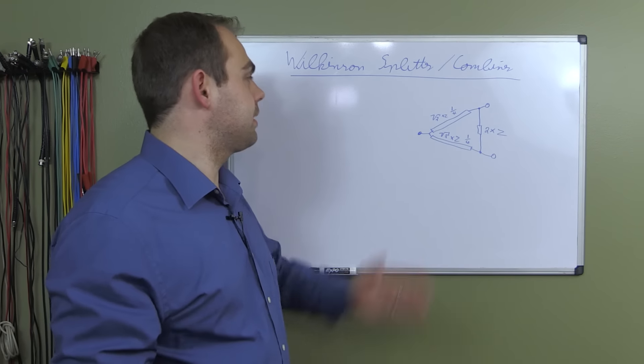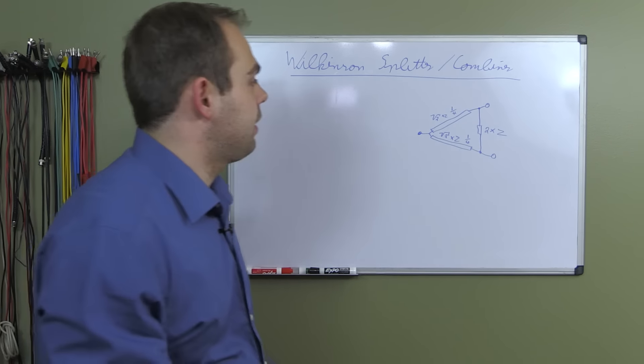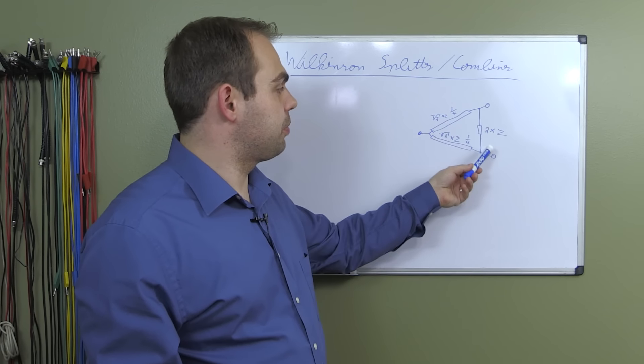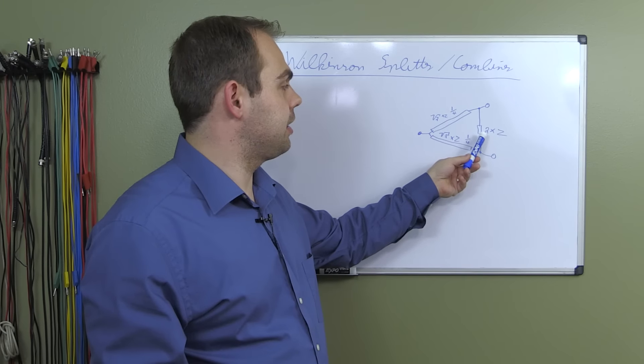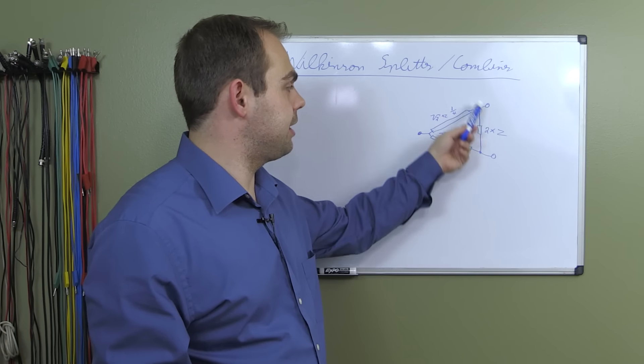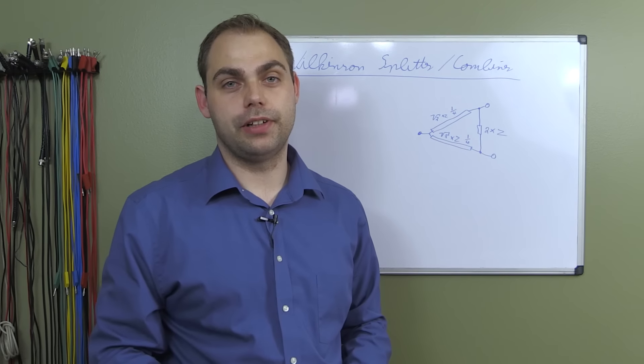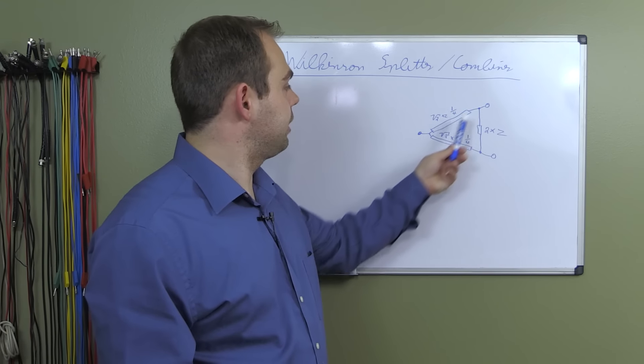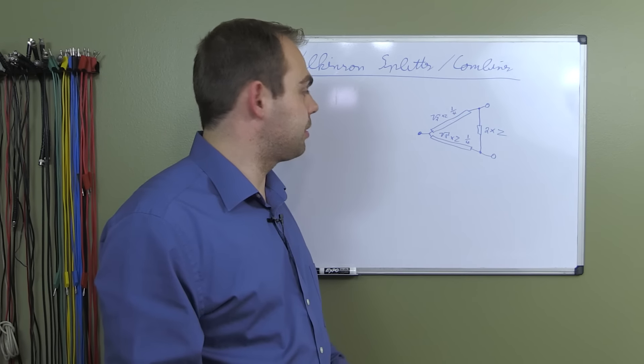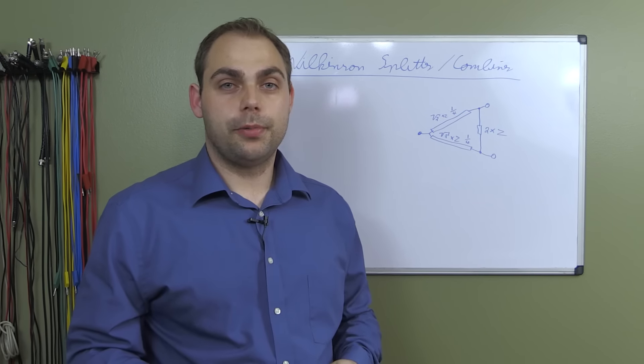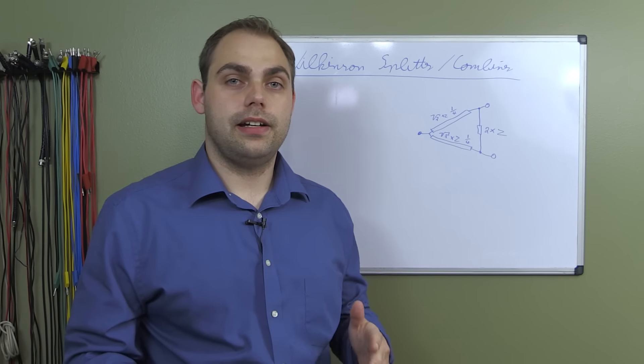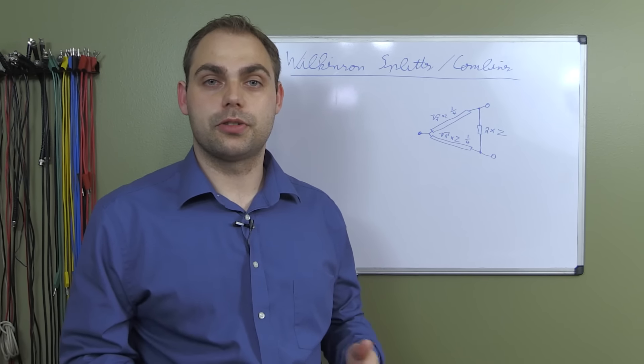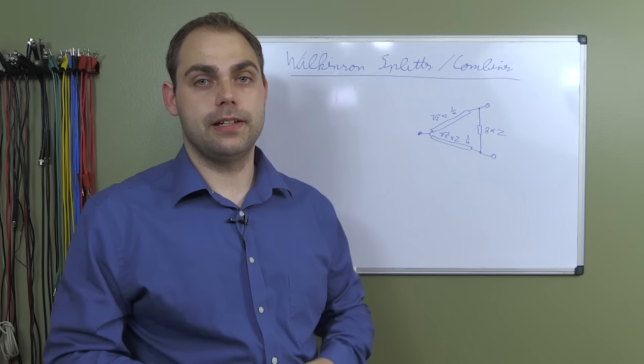And there you go. That is a Wilkinson splitter/combiner. We have an output resistor connecting our two output ports and the value is two times your impedance. If you're working in a 50 ohm environment, this resistor is going to be 100 ohms logically. And those funky lines here are transmission lines, a quarter wavelength exactly, and the impedance of those quarter wave steps is going to be the square root of two times your desired impedance.